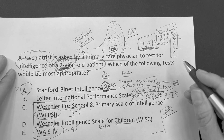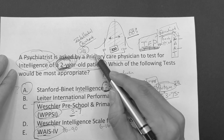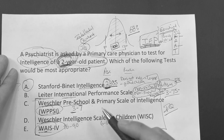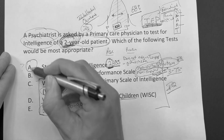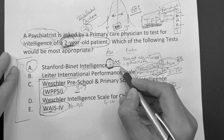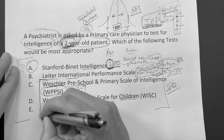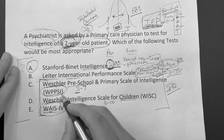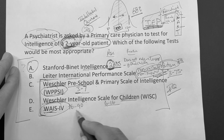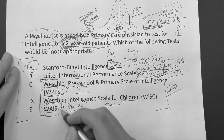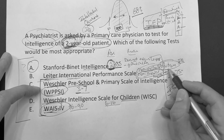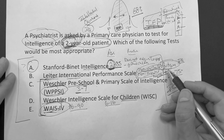Long story short, my takeaway on this: these are the tests to know. Stanford Binet Intelligence — the key is it goes all the way down to two years of age. Otherwise, look at the Wechsler scales: WPPSI three to seven, Wechsler Intelligence Scale for Children six to 16, and the adult WAIS 16 to 90. They're probably going to put just the acronyms on the exam. And the Leiter — you're going to go with that for nonverbal, non-English, and autistic people.